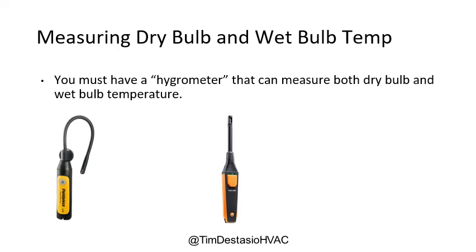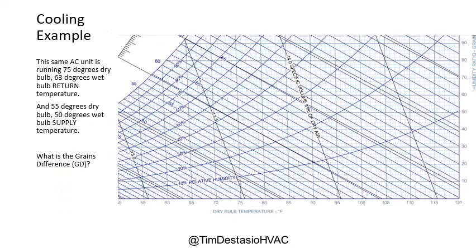You can see two examples of hygrometers that technicians use in the field — one made by Fieldpiece and another by Testo. They're very accurate and affordable. It's important to have two of them so you can take both your supply and return air readings simultaneously. With a set of hygrometers, we can plot these points on the psychrometric chart and determine the grains difference between return and supply.